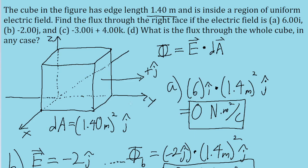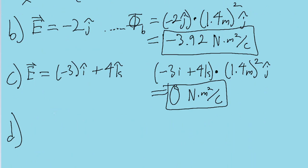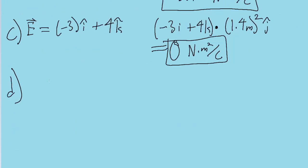Because, for example, in part a, 6i, the electric field always has a magnitude of six in the x direction. So that means that if there's a flux of six newton meters squared per coulombs into one face, then the same amount of flux comes out of that face. So it completely undoes itself. So the net flux in all parts is going to be zero. The total flux of a uniform field through a closed surface is always zero. And that is it for this problem.